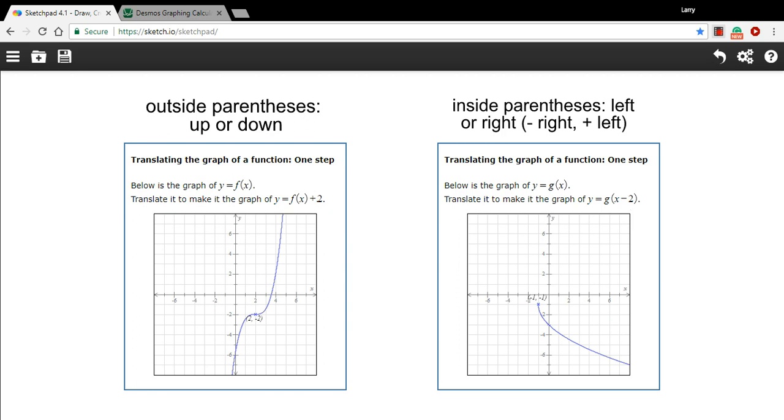When you add something on the end of a function, outside of any parentheses or absolute value signs, just a number hanging off there at the end of the function, it's going to move it up or down. It's going to move it up if it's positive and down if it's negative, so that's pretty easy to remember.